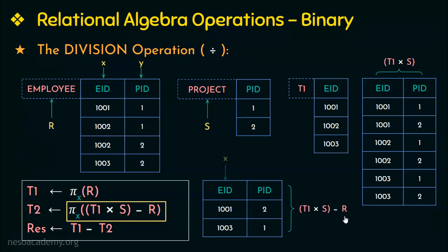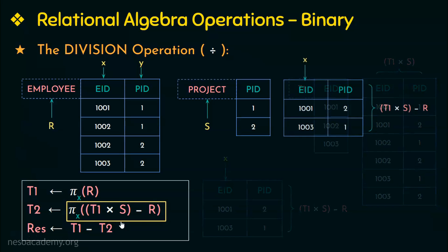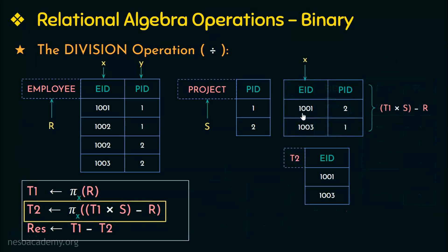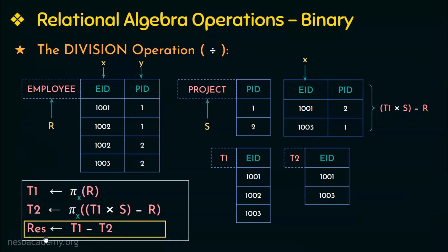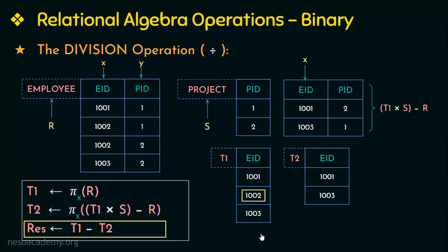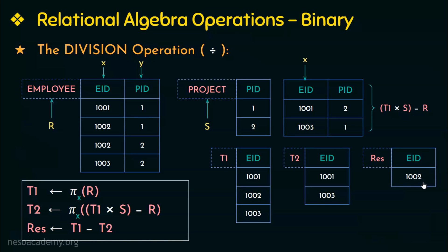The next step is to project the x attribute (eid) from this result and store it in t2, giving us 1001 and 1003. Then we compute t1 minus t2. The final result contains tuples present in t1 but not in t2. Employee 1001 is in t2 so it is not displayed; 1002 is not in t2 so it is displayed; 1003 is in t2 so it is not displayed. The resulting relation contains only employee id 1002, which is the employee who works on all the projects — the same result as using the division operator directly.